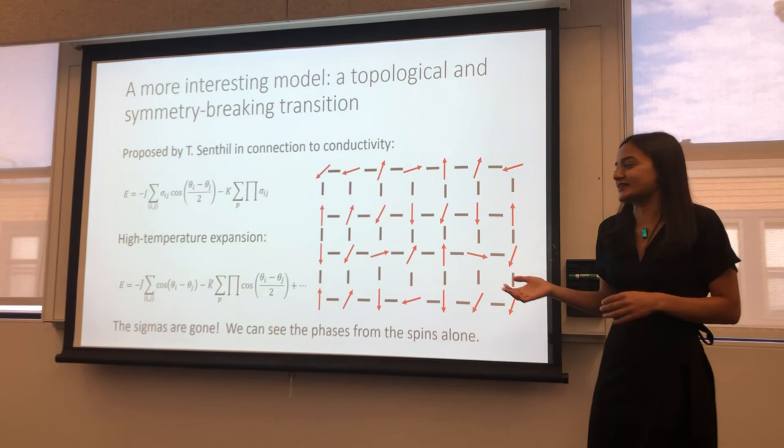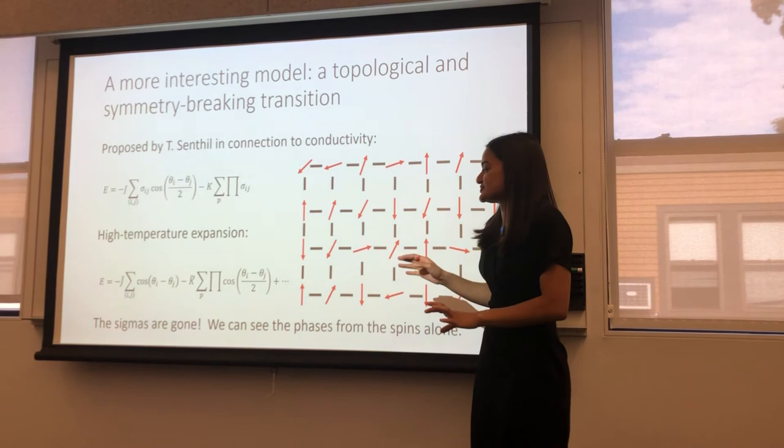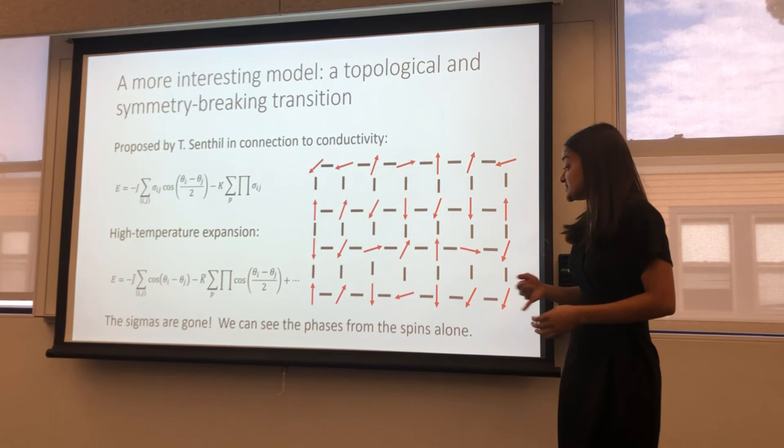What's interesting about this model is that we can do a high temperature expansion, which is very similar to doing like a Taylor expansion. And we can find that when we do this, the sigmas at least to first order go away. So that's kind of exciting. We should be able to see this all of the phases of this system just in terms of the spins alone.